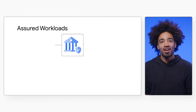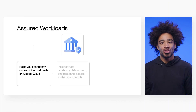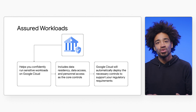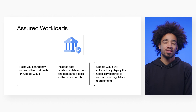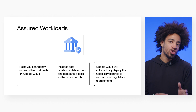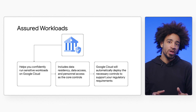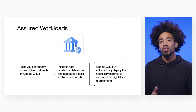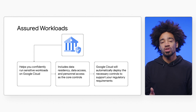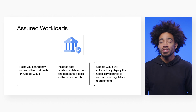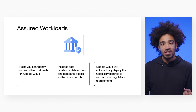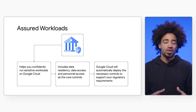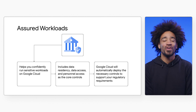Assured Workloads provides customers with controls to restrict unauthorized access to your data, even in the event of a legal seizure request. As a quick overview, Assured Workloads is a product that helps you implement and enforce specific controls so you can confidently run sensitive workloads on Google Cloud. This includes data residency, data access, and personnel access as the core controls, all of which we highlighted in a previous video.